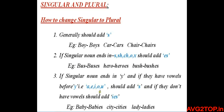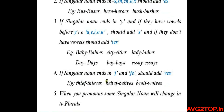The third condition: if a singular noun ends in Y and there is no vowel (A, E, I, O, U) before the Y, you should add IES. For example, 'baby' ends with Y and there is no vowel before Y, so you add IES — babies.